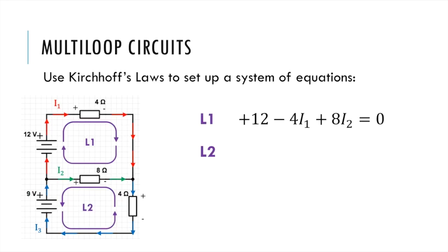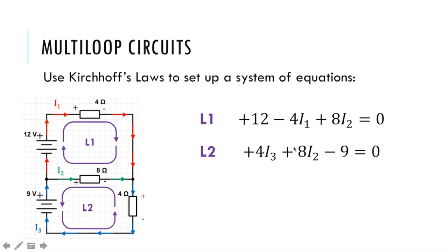We start at the bottom right corner and go counterclockwise. We go from negative to positive through the 4-ohm resistor — that's a gain. V equals IR, the resistance is 4, the current is I3, so we start with plus 4I3. As we come through the next resistor we also have a gain, going from negative to positive through the 8-ohm resistor with current I2. V equals IR says this potential difference is 8I2, which is a gain. Last we pass backwards through the battery — we move from positive to negative, which means this is a drop of 9. Now we're back to where we started, so we set it equal to zero.